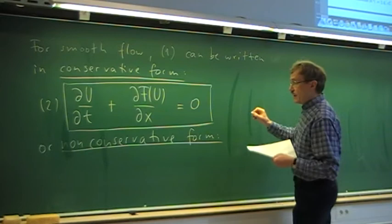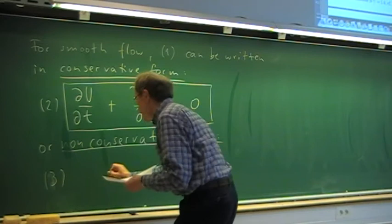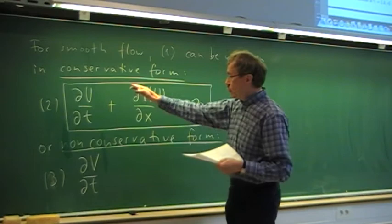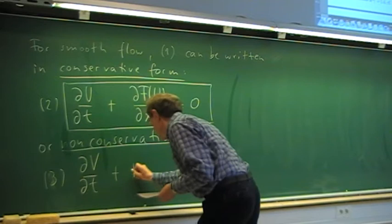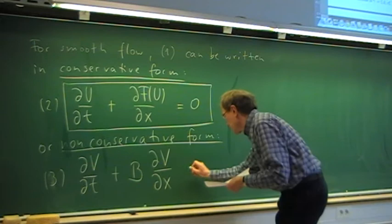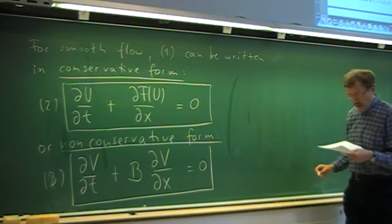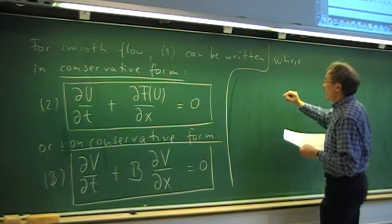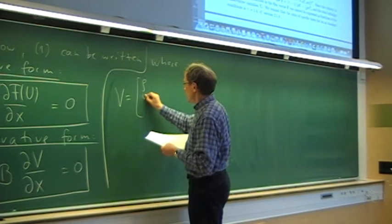In equation 3 we have different variables — the so-called primitive variables. The u were the conservative variables, and v, which we are dealing with here, are the primitive variables. We call the coefficient matrix B, and we have the spatial derivative of the primitive variables with respect to x equal to zero. The primitive variables v are the density, the velocity, and the pressure.